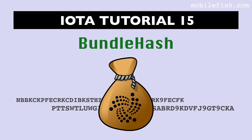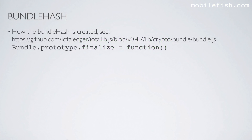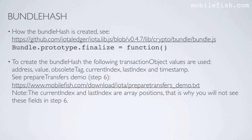In this video I will explain how the bundle hash is created. To create the bundle hash, the following transaction object values are used: address, value, obsolete tag, current index, last index, and timestamp.